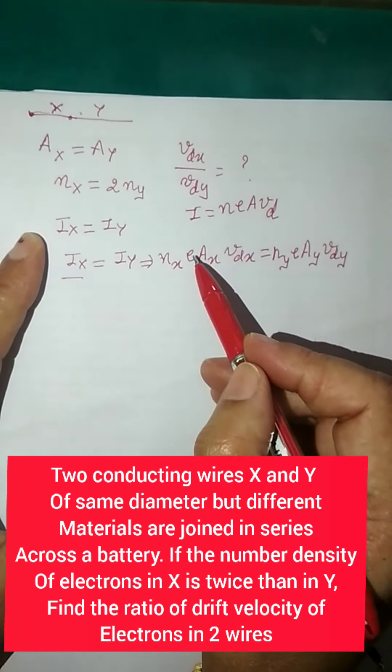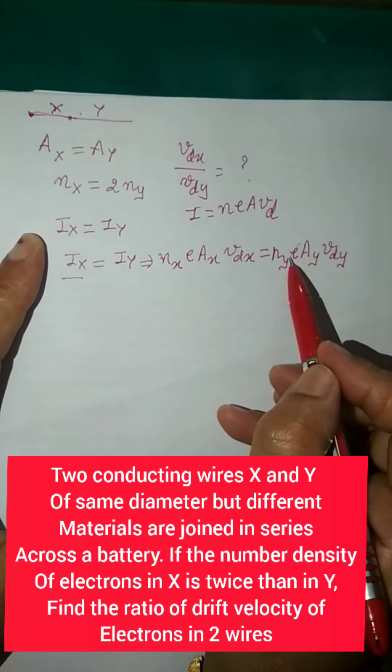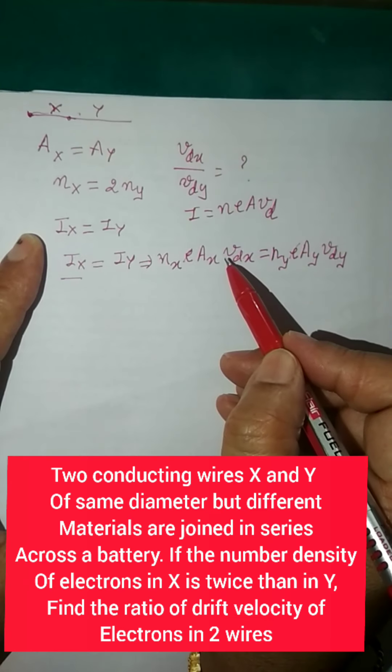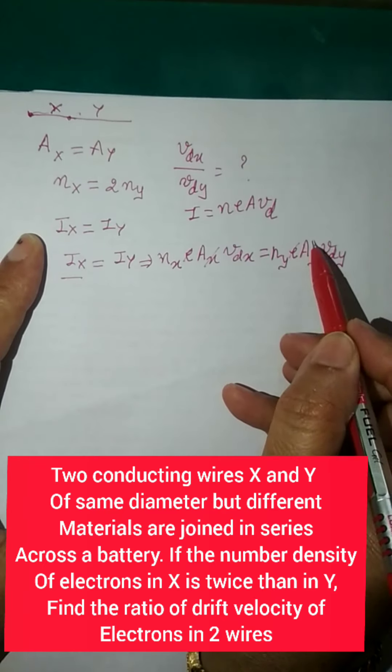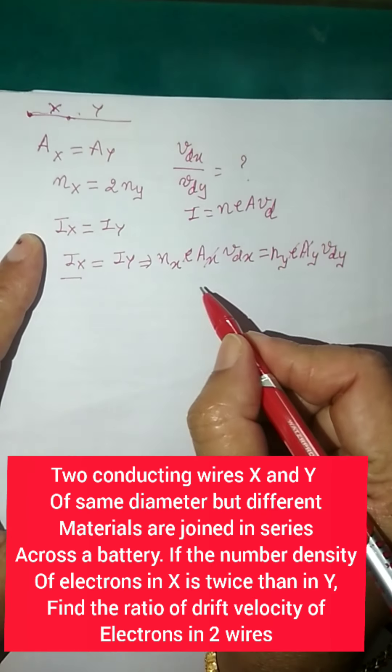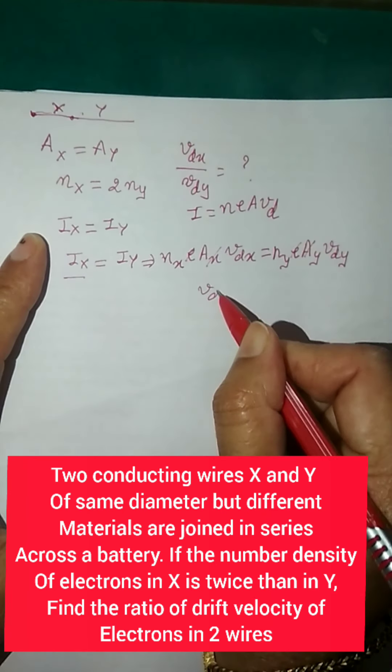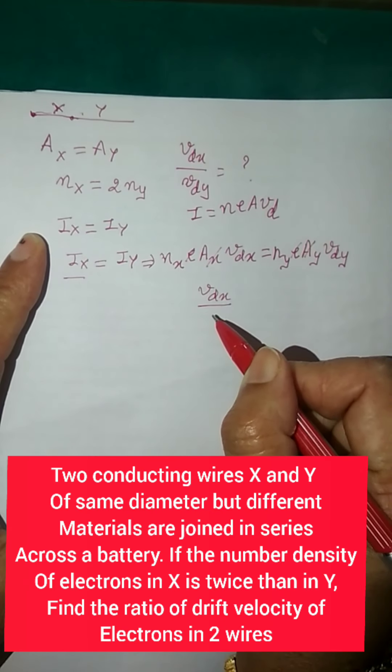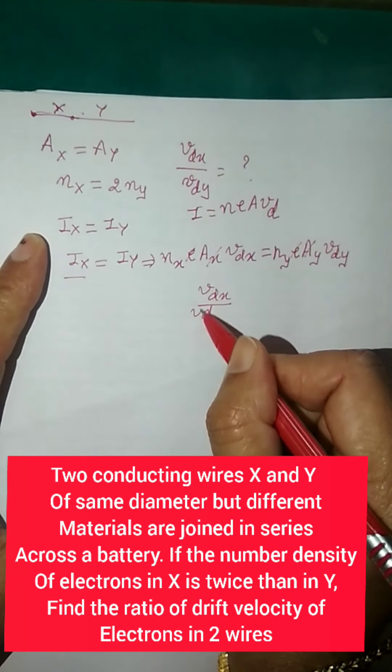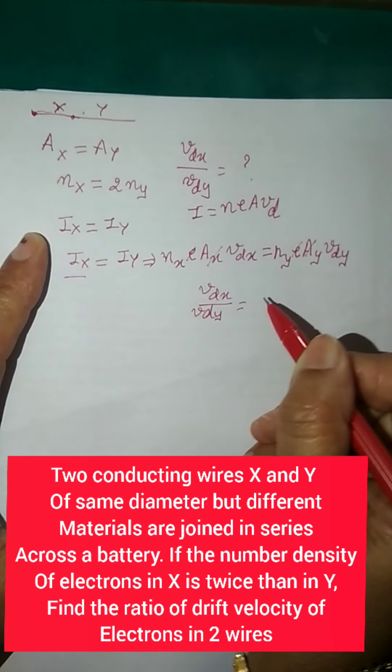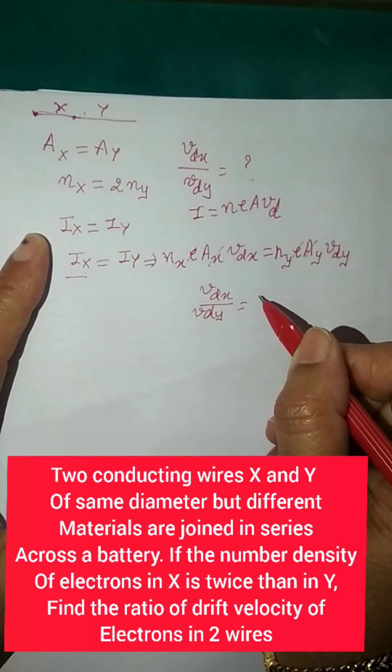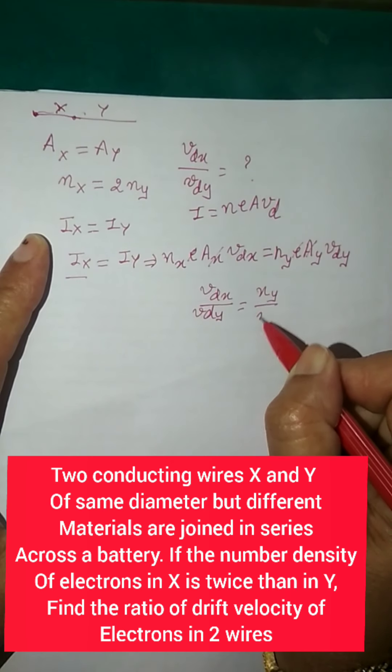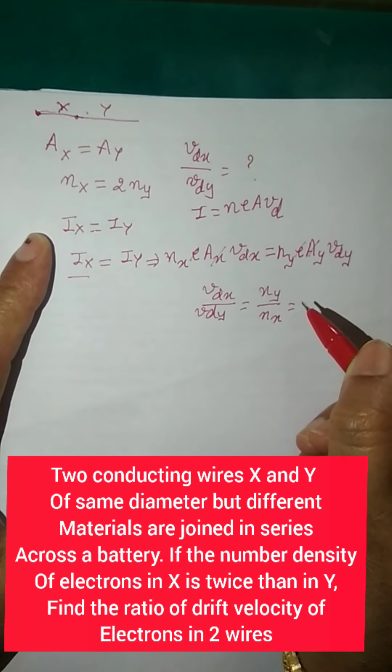So now you can say that my e is constant so it will get cancelled, and Ax is equal to Ay, that is also cancelled. So what I will get: my Vdx by Vdy, if you arrange the terms, Vdx by Vdy will be equal to ny by nx.